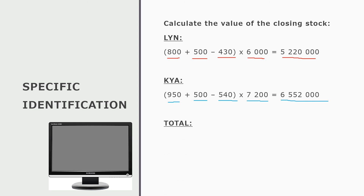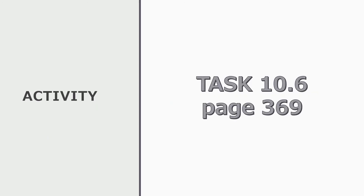Then all we have to do is add them together — the value of the Lynn models in stock plus the value of the Kia models in stock — and that gives the total value of all stock on hand at the end of the financial year. Now you get to practice this specific identification method by completing Task 10.6 on page 369 of the textbook. We have now done one example of each of the different valuation methods, and all three homework activities will be marked when we are back in class on Thursday.